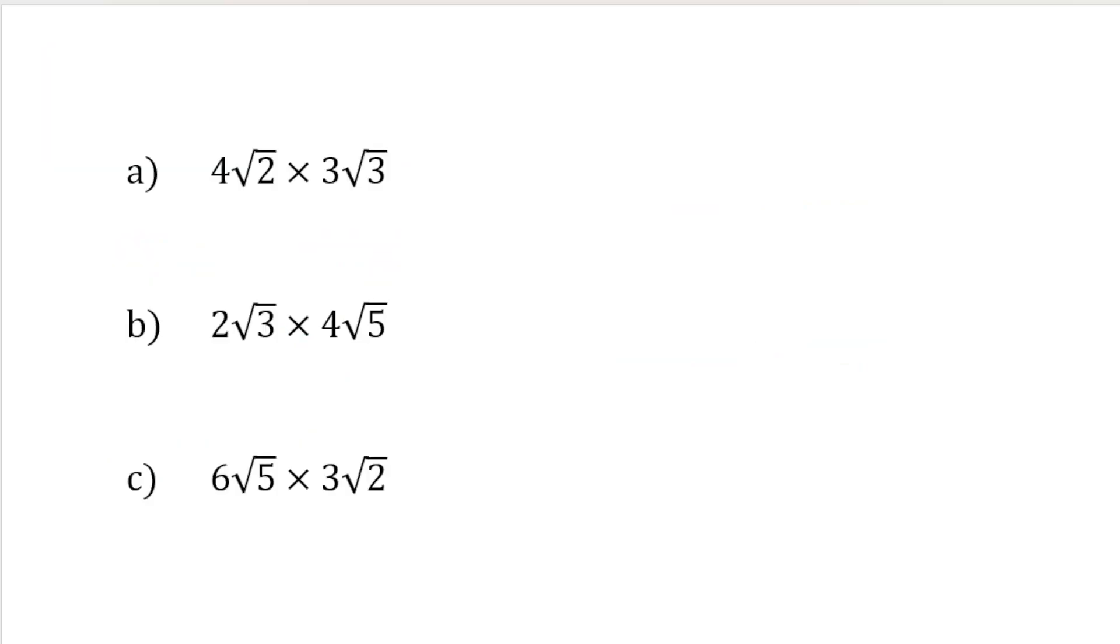Now, what would happen if we've got, for example, 4 root 2 times by 3 root 3? Well, the best way to do this is to multiply the numbers before the surds first. So we do 4 times by 3, which is 12.